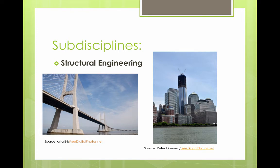Let's talk about the sub-disciplines found in civil and environmental engineering. The first we'll talk about is structural engineering. Structural engineers work on buildings, bridges, towers, and other structures. They are responsible for designing these structures in a way that will be safe and economical.